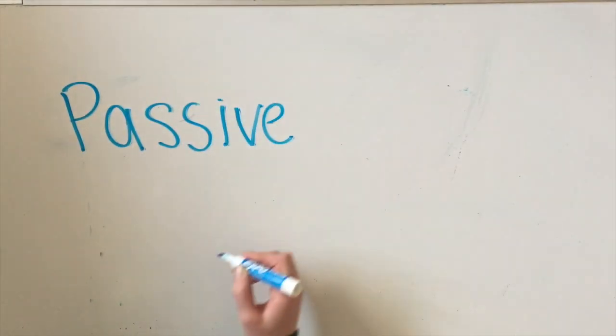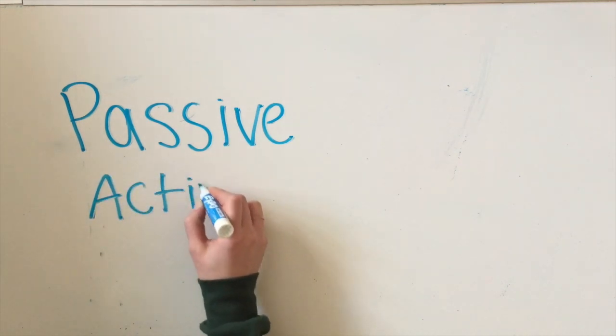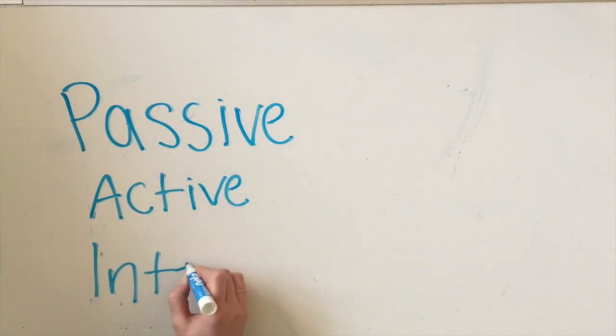There are three major ways to reduce uncertainty about the target person: passive, active, and interactive strategies.